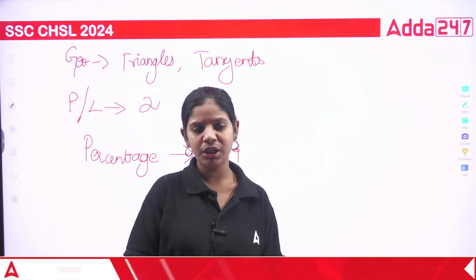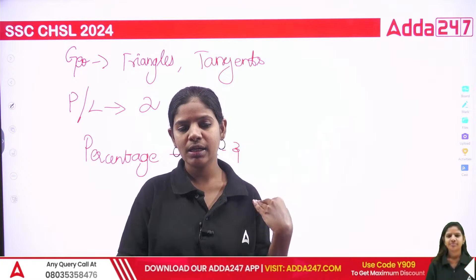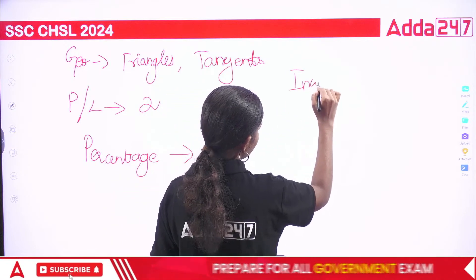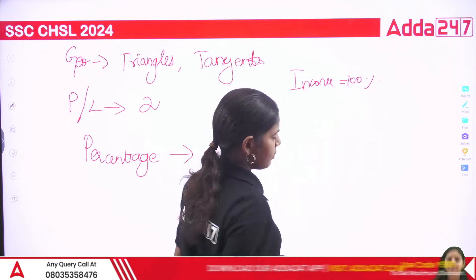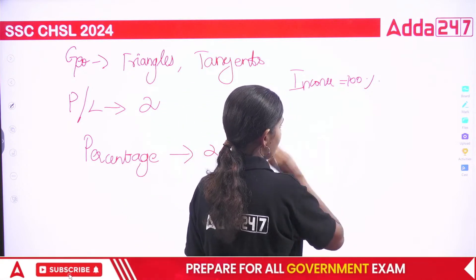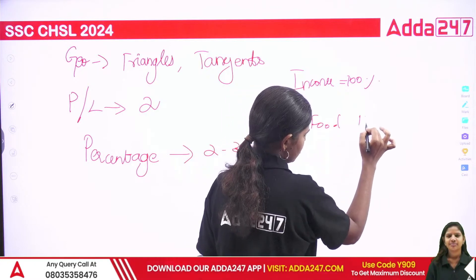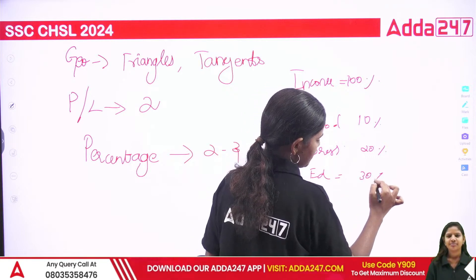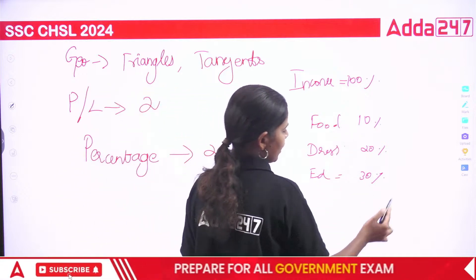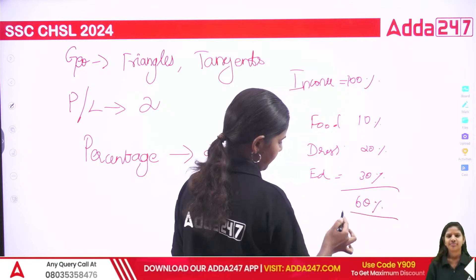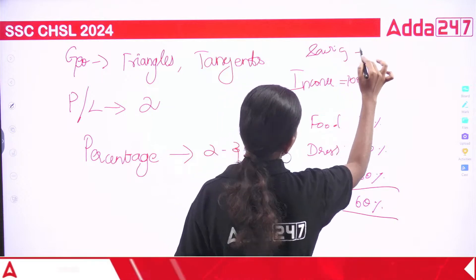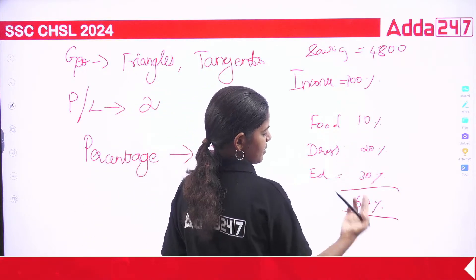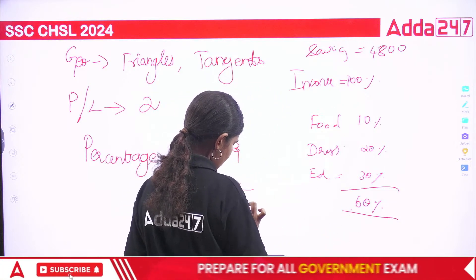If you do, you will equate income to 100%. Income will always be taken as 100%. So income is 100%, spending is 100%: food is 10%, dress is 20%, education is 30%. Rest is saved. Total spending is 60%. Savings amount: savings is $4800. How much income? Out of 100%, 60% is spent, 40% is savings. 40% equals $4800.